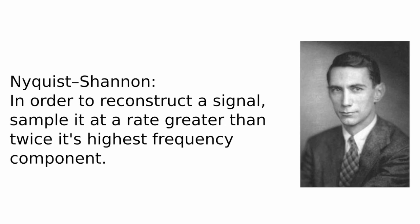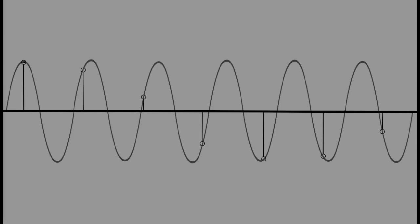If we do not sample at a high enough rate, the reconstructed signal may not resemble the original. This phenomenon is known as aliasing.